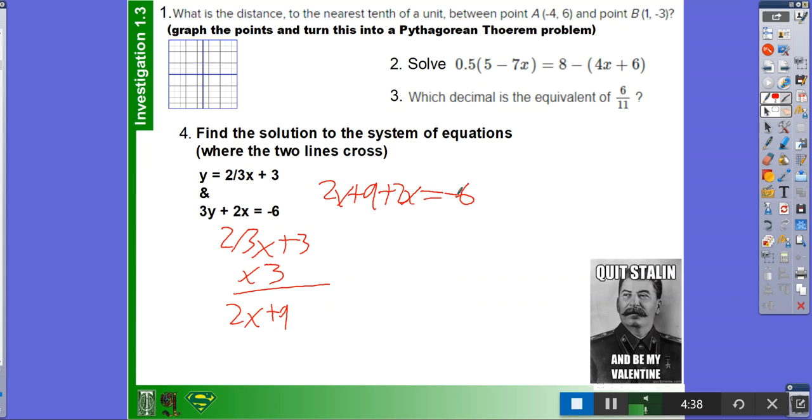And so you would add the similar terms, which are 2x and 2x. So that would be 4x plus 9 equals negative 6. And then you would subtract 9 from both sides, and you'd get 4x is equal to negative 15. And then you would divide both sides by 4.